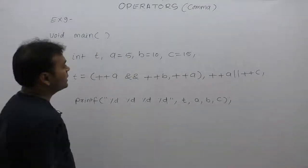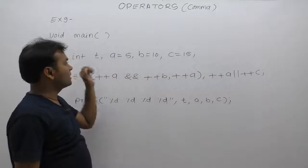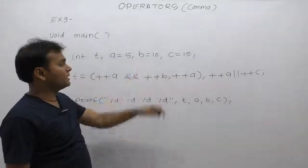Next one, again we are declaring three variables. In this example, four variables: T, A, B, C.